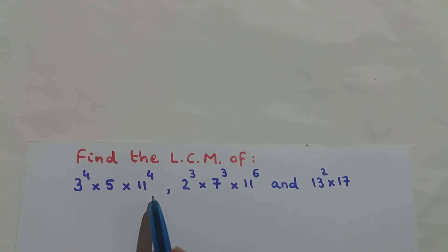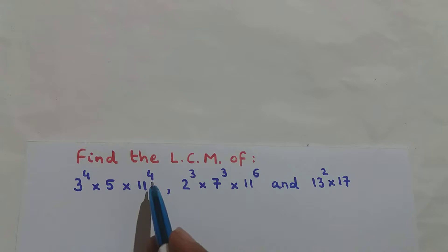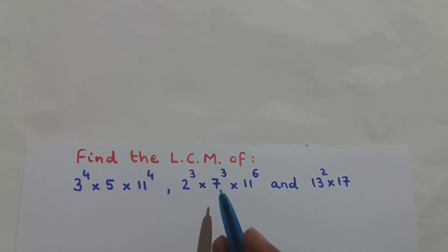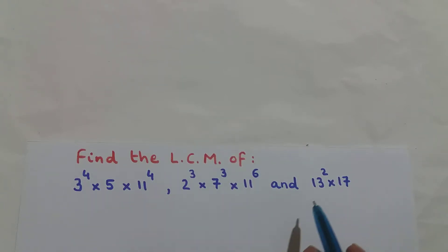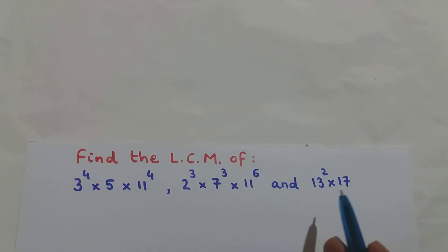In each expression, everything is getting multiplied to each other. In the first expression, 3 raised to the power of 4 is multiplied to 5, which is multiplied to 11 raised to the power of 4. In the second, 2 raised to the power of 3 is multiplied to 7 raised to the power of 3, which is multiplied to 11 raised to the power of 6. In the third, 13 squared is multiplied to 17.